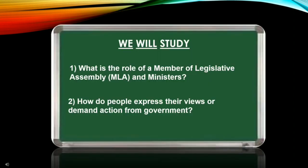Students, open your books and come to page number 30. Our government works at three levels: local, state, and national. In this chapter, we will learn how does the government work on the state level.